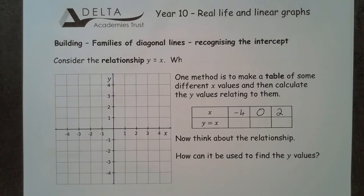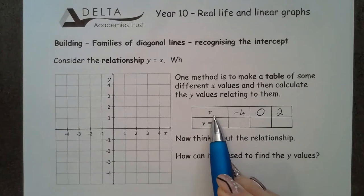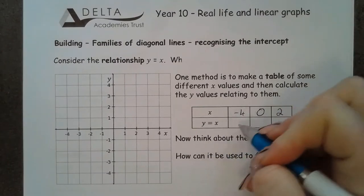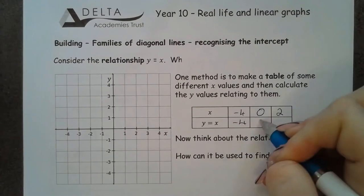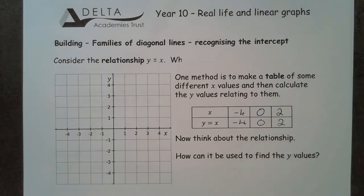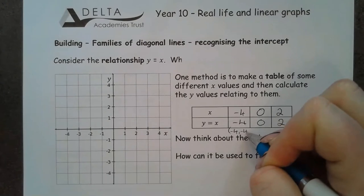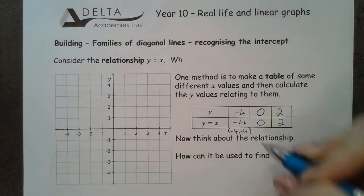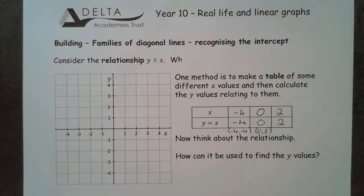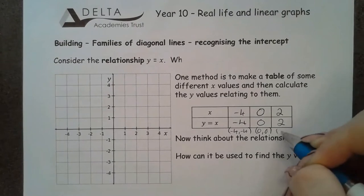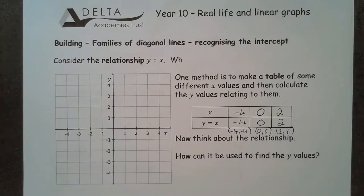This relationship is a nice and easy one — it literally means that anything I have in x is the same in y. So my y coordinates will be minus 4, 0, and 2 as well.